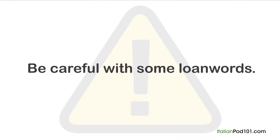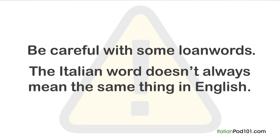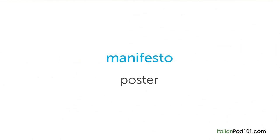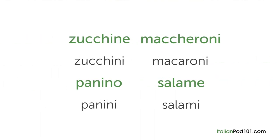Be careful with some loanwords, though — the Italian word doesn't always mean the same thing in English. For example, 'manifesto' in Italian means 'poster.' English loanwords don't always follow Italian grammar either — 'zucchini' and 'macaroni' are spelled differently in Italian. English words like 'panini' and 'salami' are mistakenly used in the plural form. A presto!